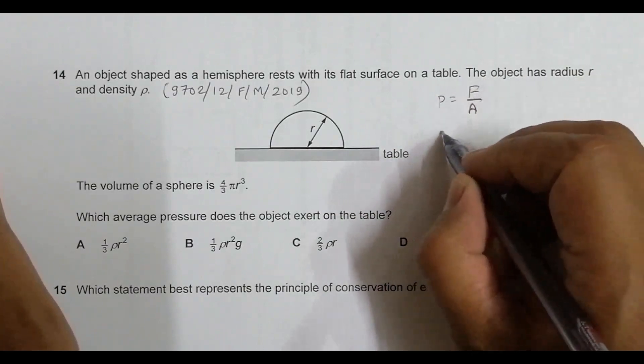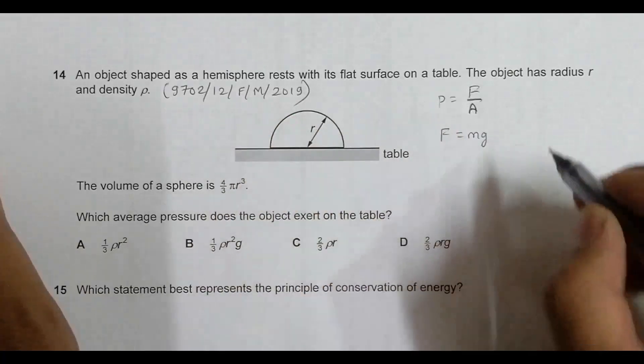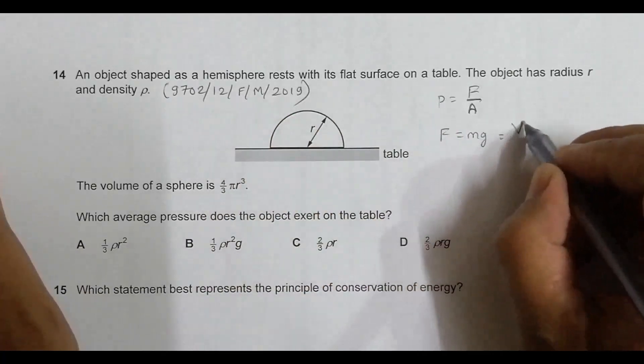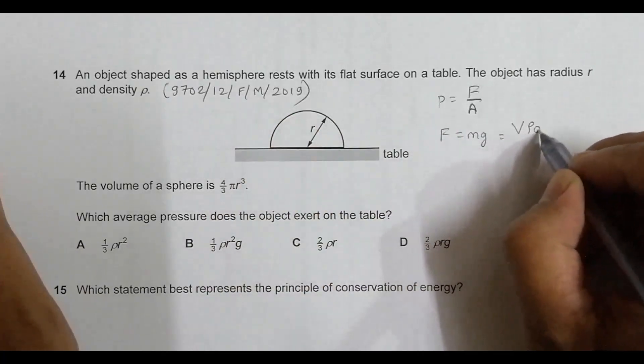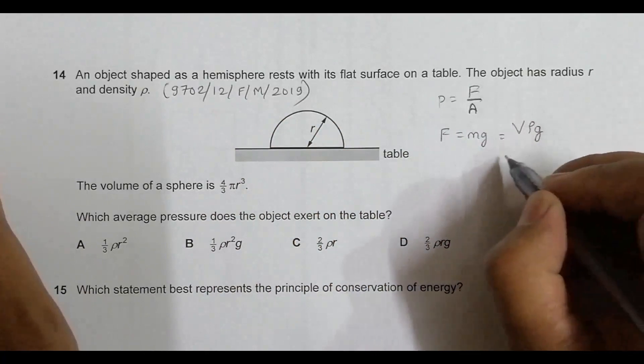First, let us find the force. The value of force is equal to mass times g. For this hemisphere, mass equals volume times ρ times g, where ρ is the density.